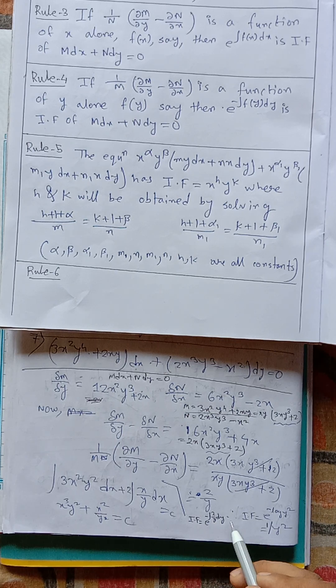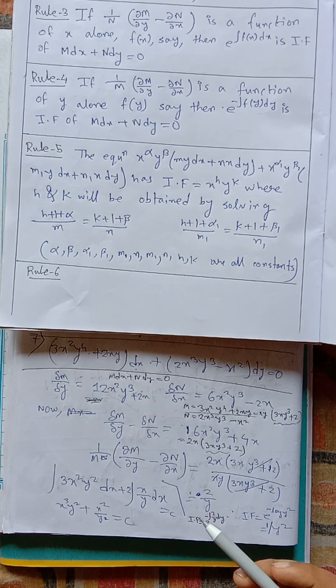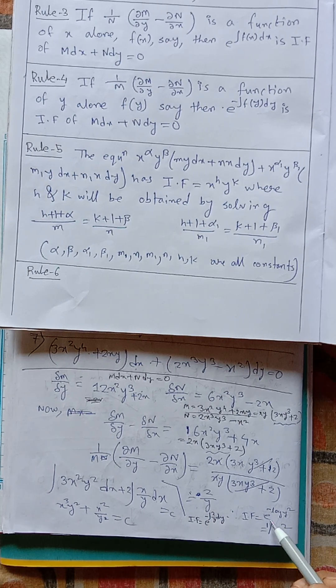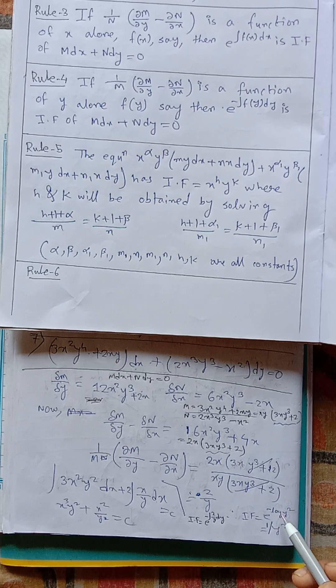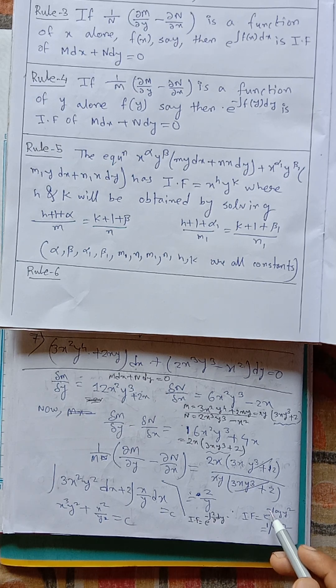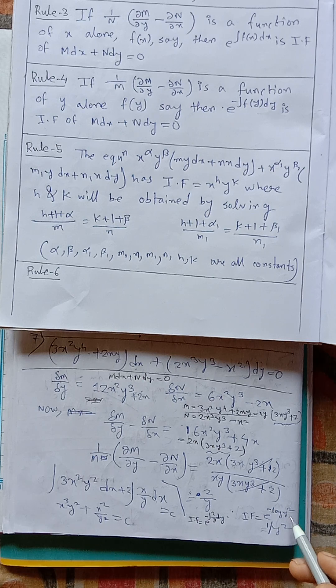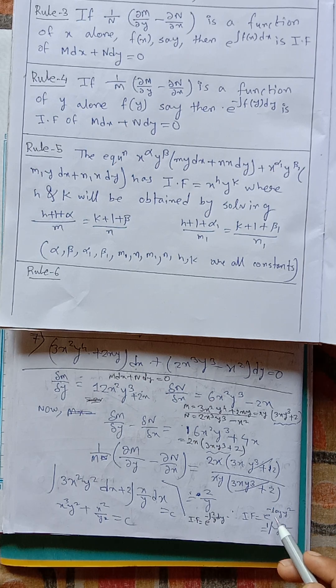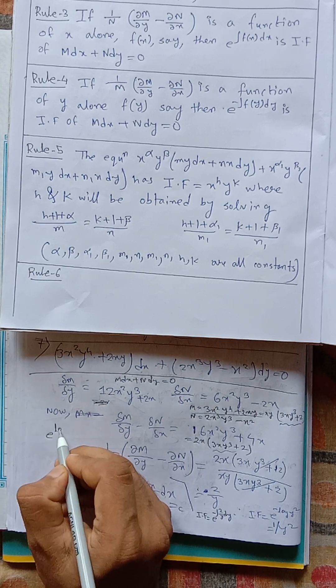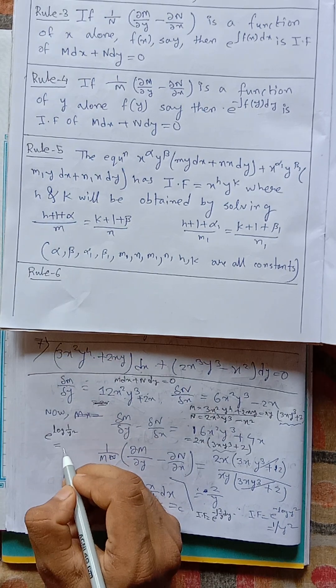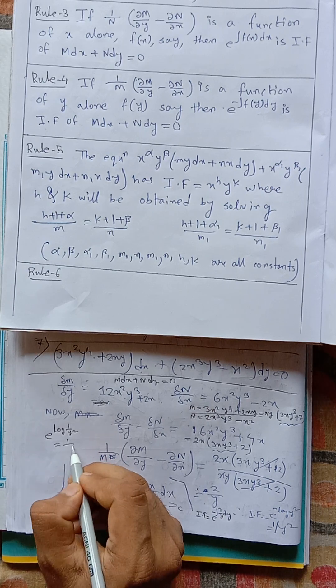Minus 2 log y and minus log y square. Integration e to the power minus log y square. And if we remove minus, then it will be 1 by y square. And we all know that e to the power log 1 by y square equals to 1 by y square.